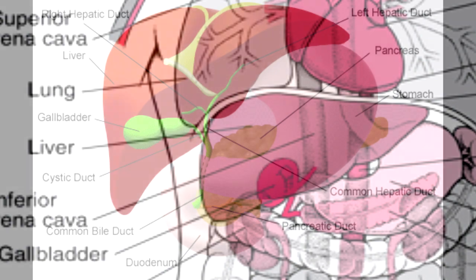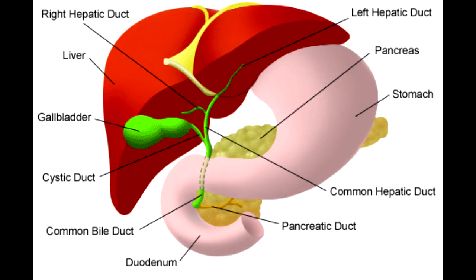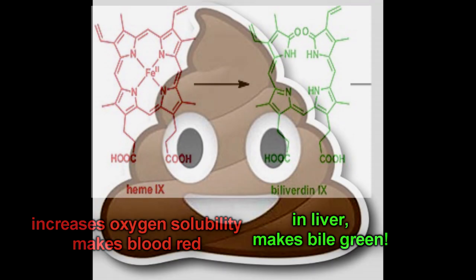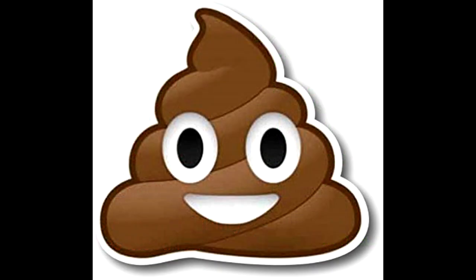So yeah, it turns out the reason that blood is red and bile is green is because of the same compound that increases the solubility of oxygen in your blood. Then of course finally, by the time it's worked its way through your digestive system, it's oxidized a little further and gone brown.